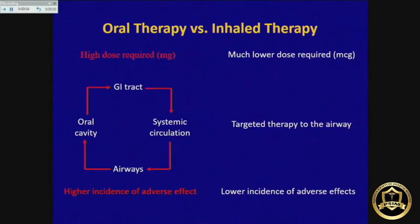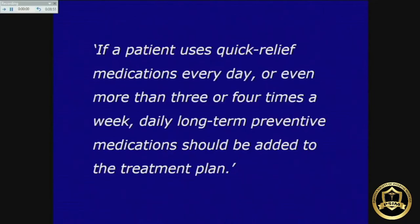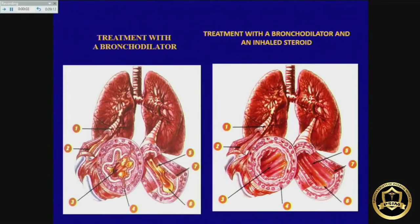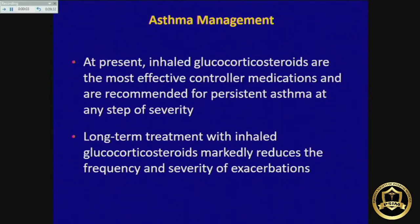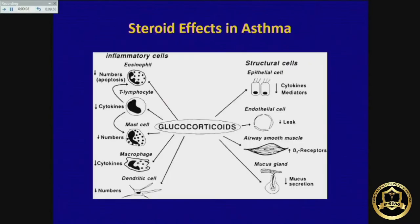Inhalers are the best way of treating asthma patients because the drug reaches directly into the airway without producing side effects. However, many patients in Pakistan are on tablets or injections rather than inhalers. Anyone requiring a bronchodilator more than once a week should be on anti-inflammatory preventive drugs as well. If you do not give them preventive drugs, you are only relieving bronchospasm while the underlying inflammation goes unaddressed. Inhaled corticosteroid is the most important drug, reducing both frequency and severity of exacerbations.